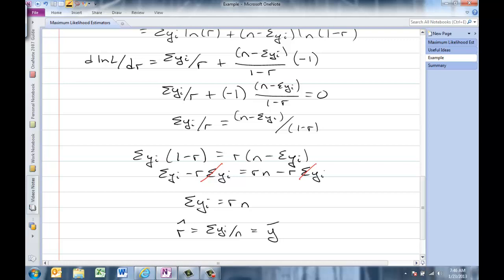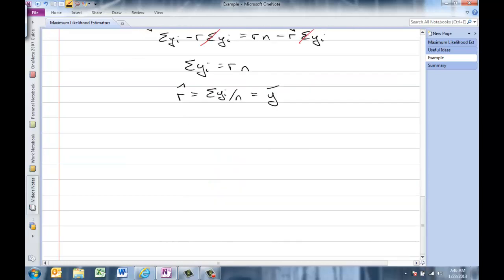Our maximum likelihood estimator for the error probability is just the average number of errors, y bar. Now I have to confirm that that's a maximum. The fact that I set it equal to zero could have been a minimum or an inflection. You can use the second derivative or you can look at points on either side and I'll leave that for you to do on your own.